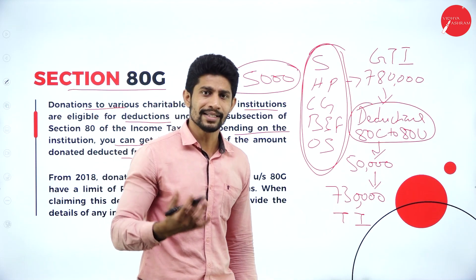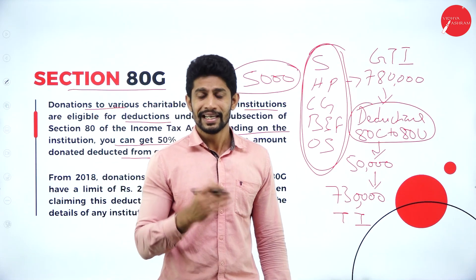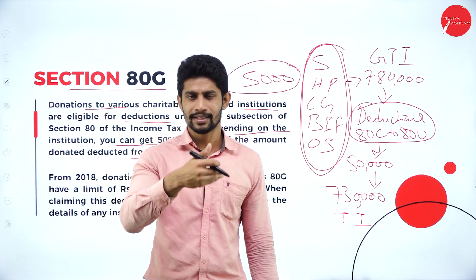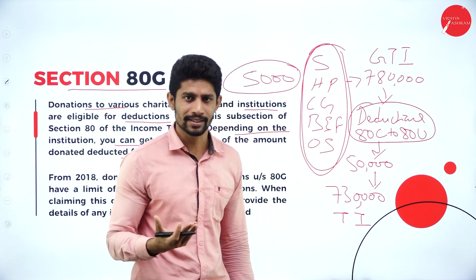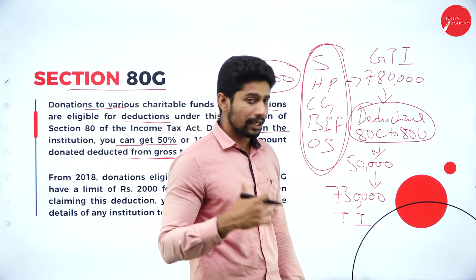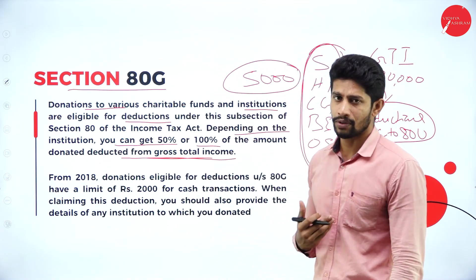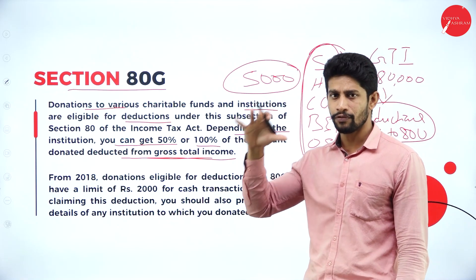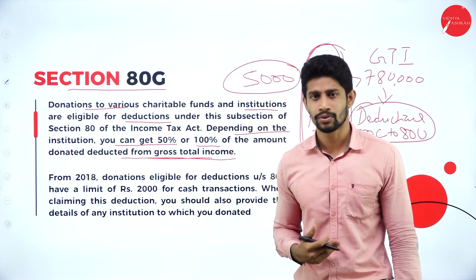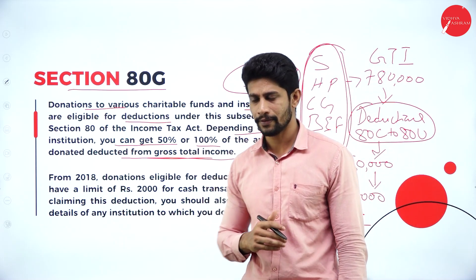On that balance income, we impose the tax. If the balance is less than 5 lakh rupees, there is no tax. If it is more than 5 lakh rupees, you calculate the tax and you are supposed to pay it. Whatever the tax amount you get, that amount is supposed to be remitted by you to the government within the prescribed time period.